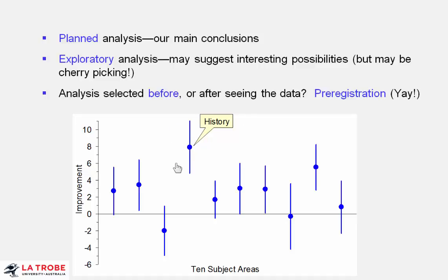Now, suppose we read a report that says, I plan to look at history in particular. How can we be guaranteed that that was in fact planned in advance?